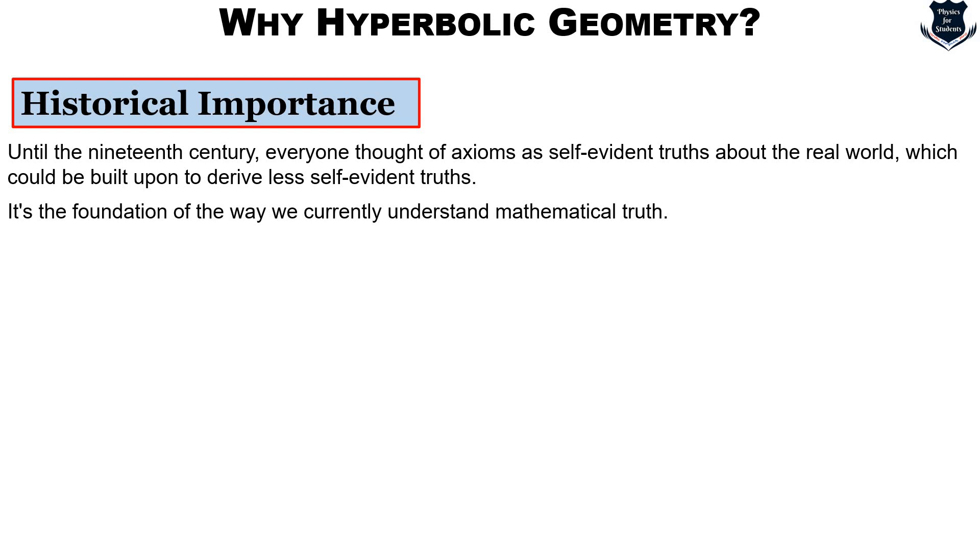Since the discovery of hyperbolic geometry, axioms have been thought of as more or less arbitrary assumptions that could be used to get an axiomatic system started and then everything proved within that system is exactly as valid as the axioms themselves. So it is the foundation of the way we currently understand mathematical truth and this is really very important and that is why I called it the historical importance.